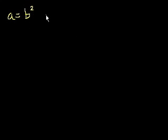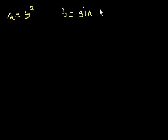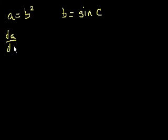So let's say that a is equal to b squared, and that b is equal to the sine of c. The question is: what is the derivative of a with respect to c?